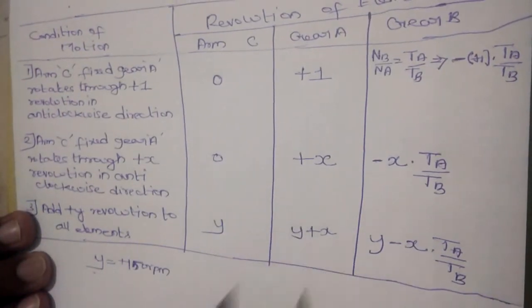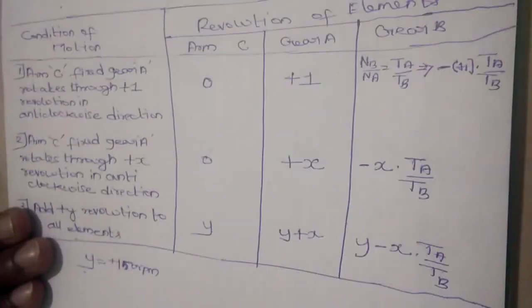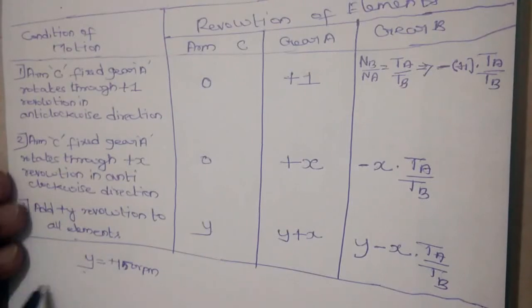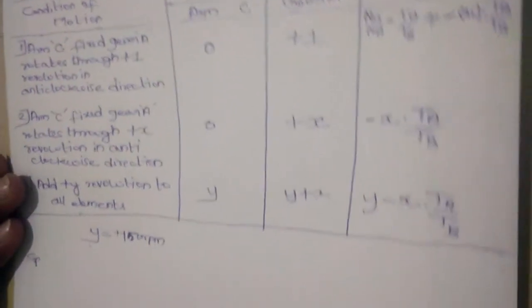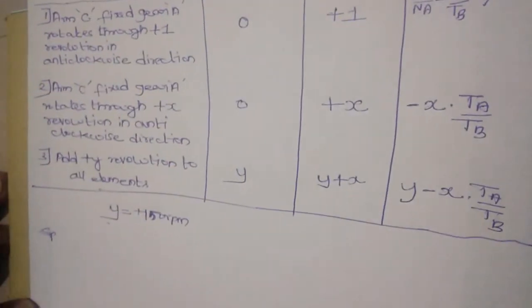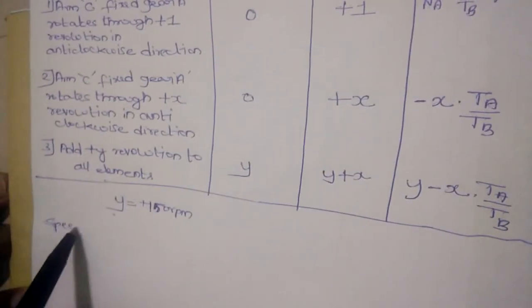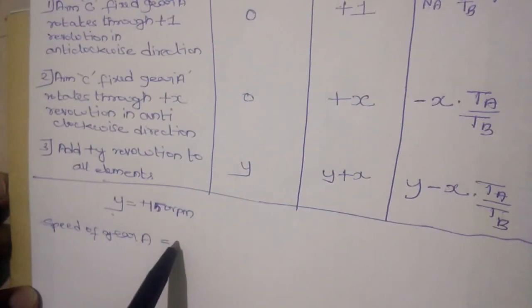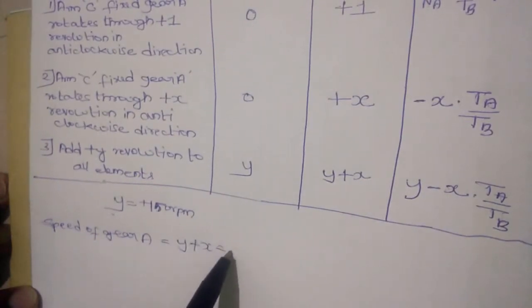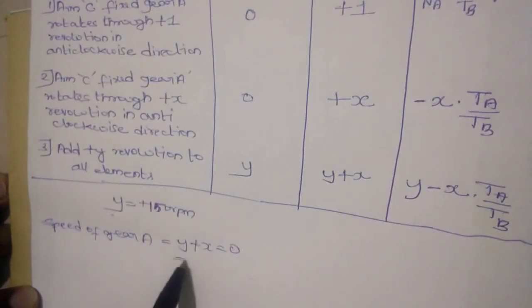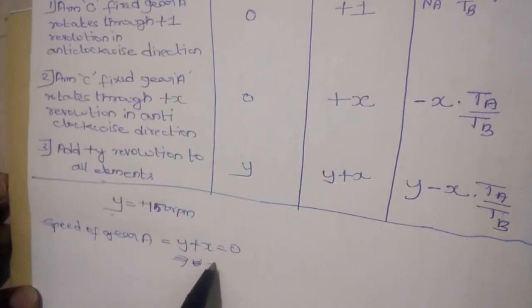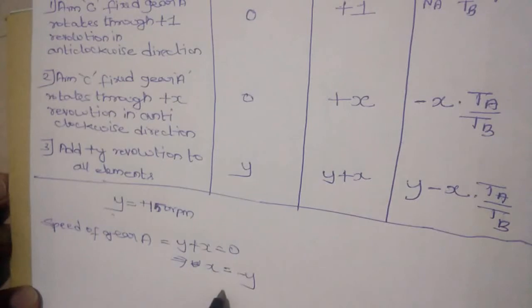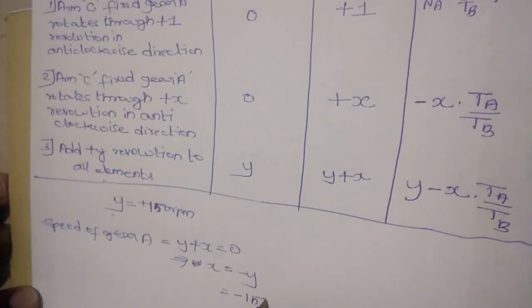Gear A is fixed. Gear A is fixed. Therefore, speed of Gear A is equal to y plus x is equal to 0. This implies x is equal to minus y is equal to minus 150.